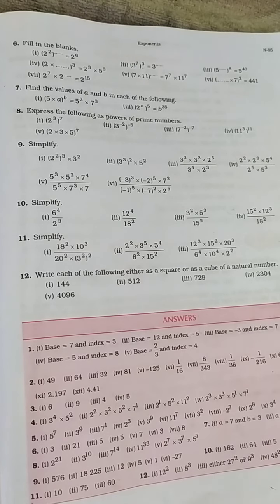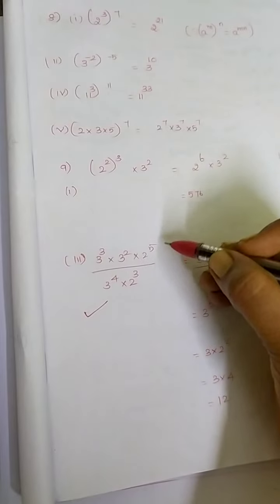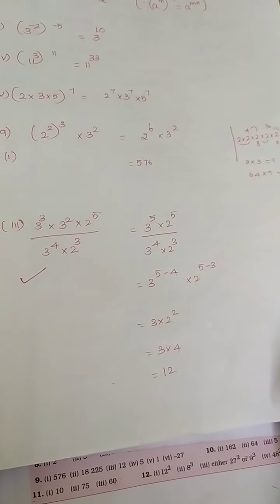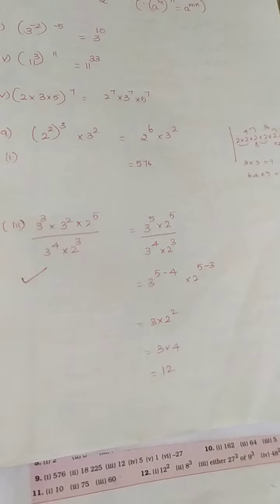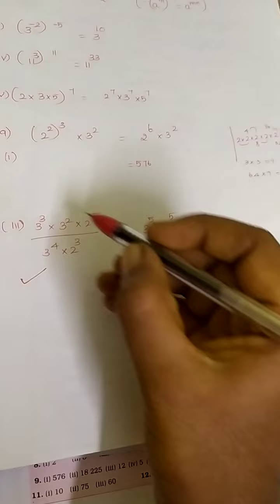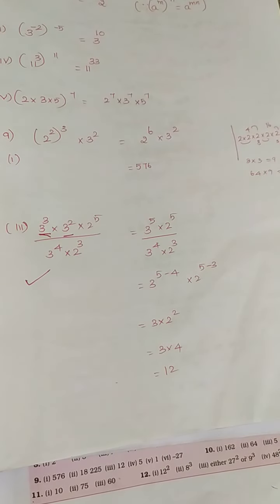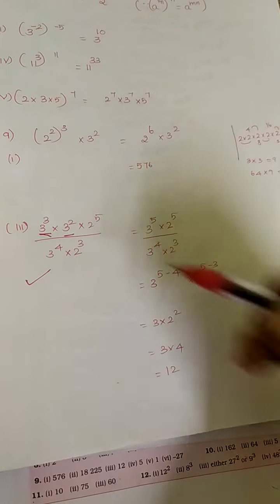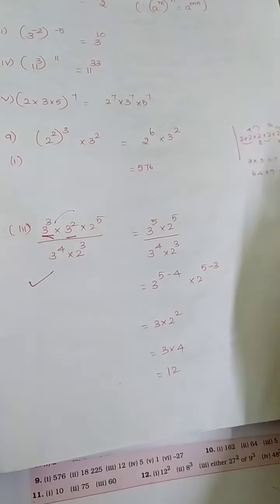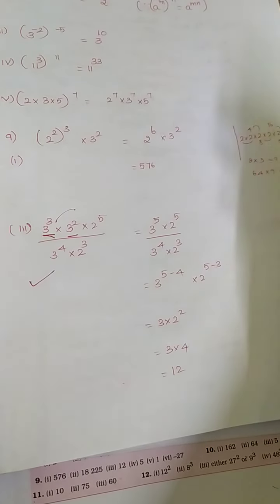For simplification, I will explain one problem. We have: 3 cubed multiplied by 3 squared multiplied by 2 power 5, divided by 3 power 4 multiplied by 2 cubed. First, look at the numerator for the same base. In the numerator, you have base 3 twice, so add the powers: 3 plus 2 equals 5. This gives 3 power 5 multiplied by 2 power 5, divided by 3 power 4 multiplied by 2 cubed.